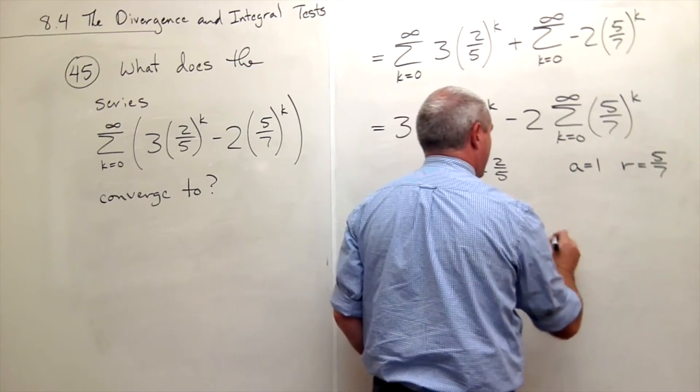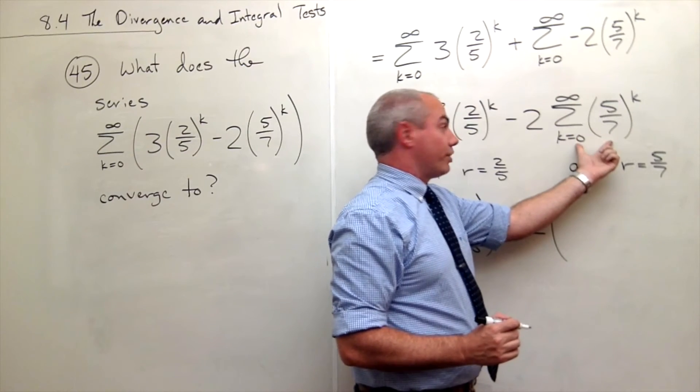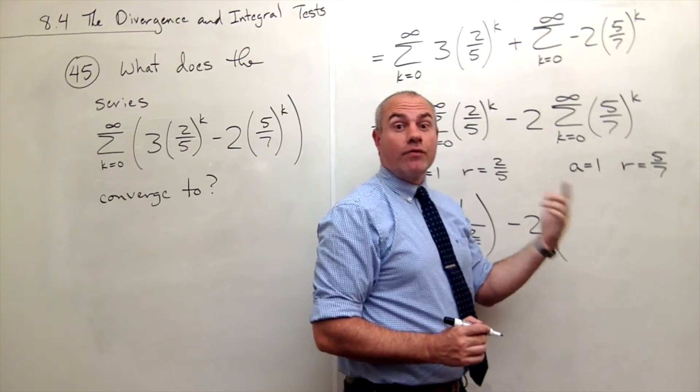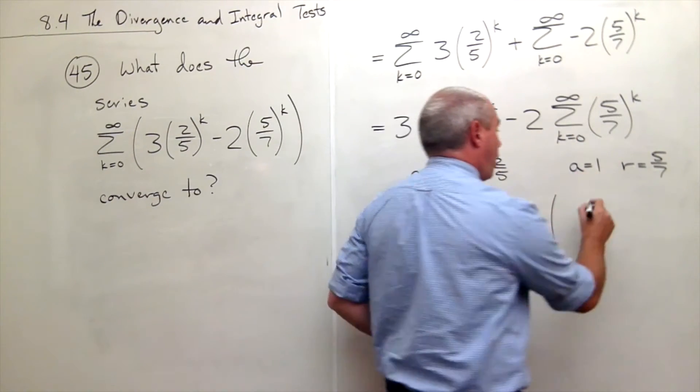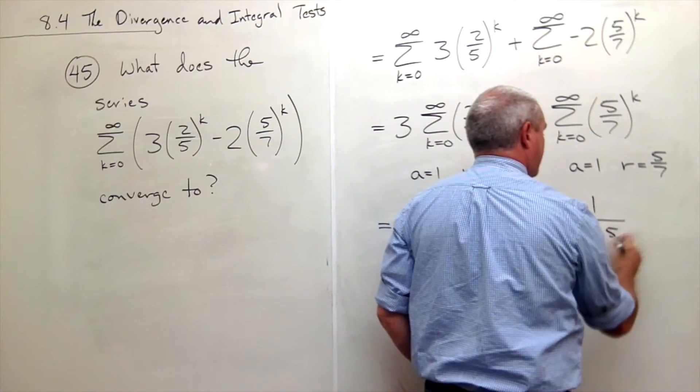Minus two times whatever this guy converges to, but we know what that is. It's a over one minus r. A is one, and then I get one minus r, which is five-sevenths.